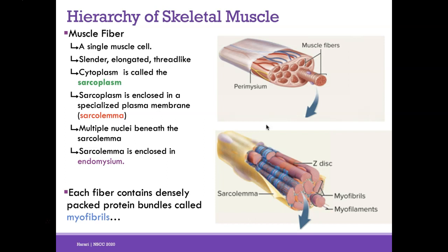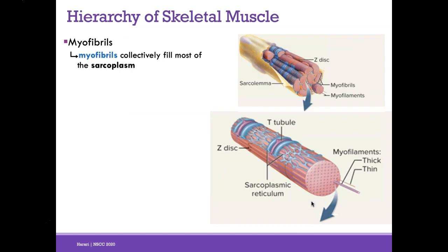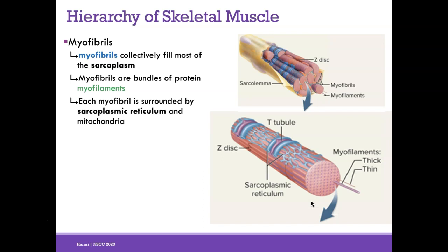Each muscle fiber contains bundles of proteins called myofibrils. Within each myofiber there are myofibrils, and within each myofibril we find myofilaments. Myofibrils collectively fill most of the sarcoplasm — most of the sarcoplasm is dense with myofibrils, which are just bundles of myofilaments. Each myofibril is surrounded by the sarcoplasmic reticulum, a modified endoplasmic reticulum, and also abundant mitochondria.